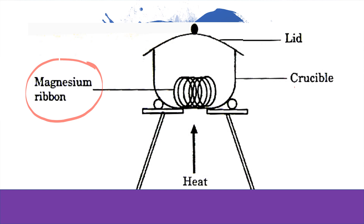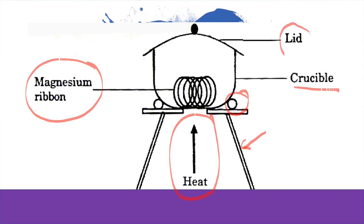The apparatus used includes a crucible, pipe clay triangle, tripod stand, Bunsen burner, and a crucible with its lid.